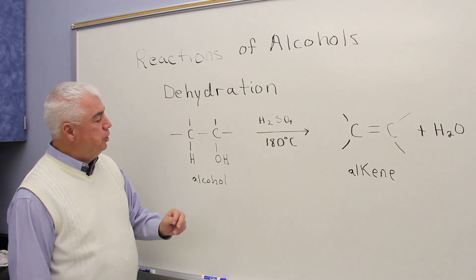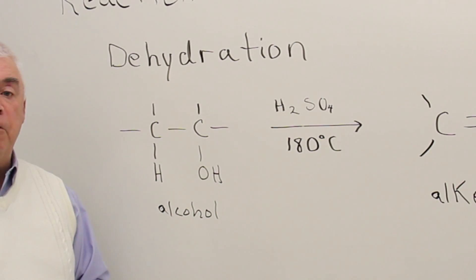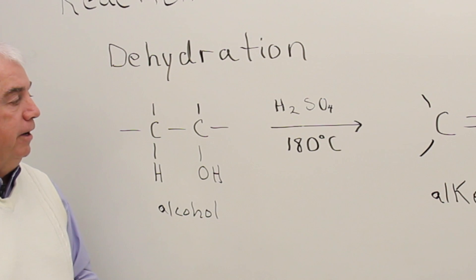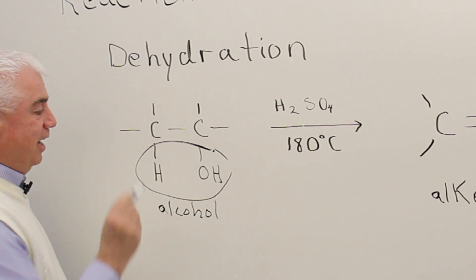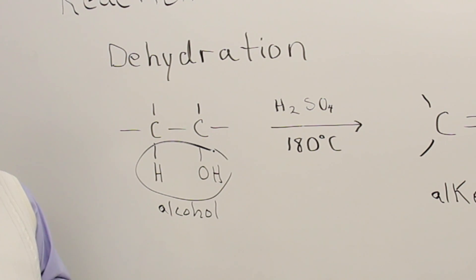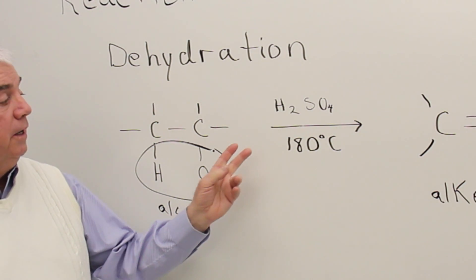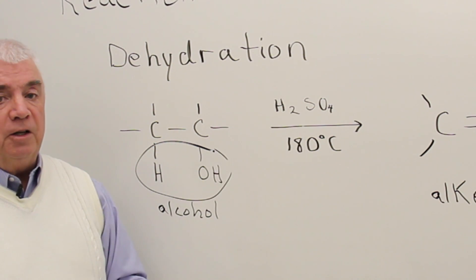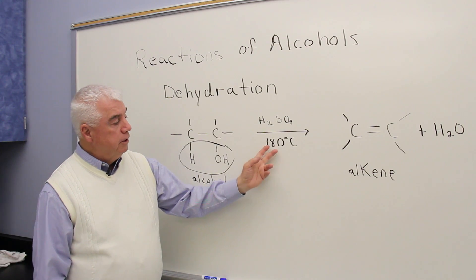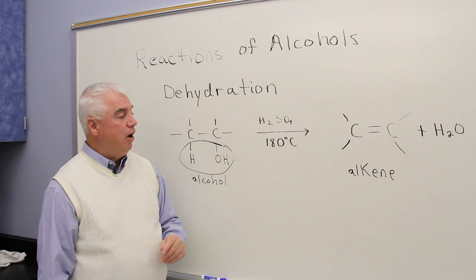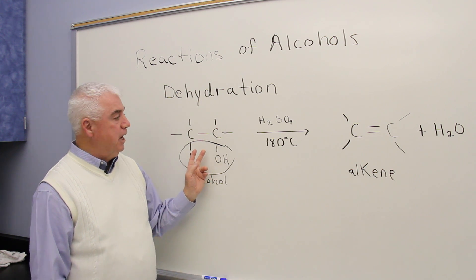When dehydration occurs, a molecule of water is removed from the structure of an alcohol. The agent that causes this, or the catalyst, is sulfuric acid, and so it's placed above the arrow. 180 degrees centigrade are conditions that promote this kind of dehydration.